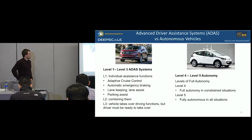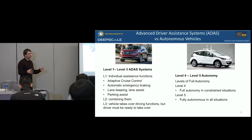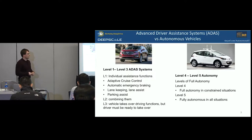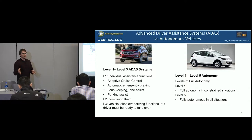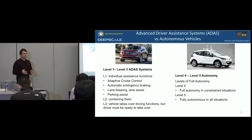Level four with tight restrictions on the geofence is the kind of thing that places like Waymo, Cruise Automation, Uber, and Zoox are working on — particularly urban and suburban environments that they map themselves. Level five, as currently stated, is such an unbounded problem it's hard to imagine what that would really even mean.